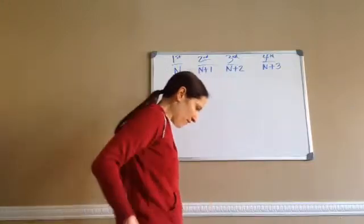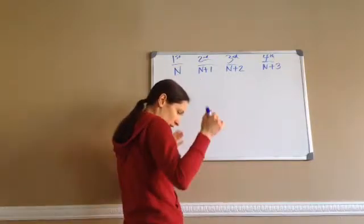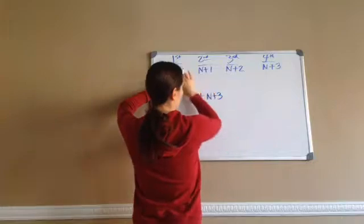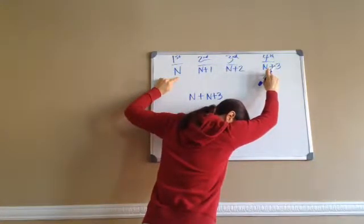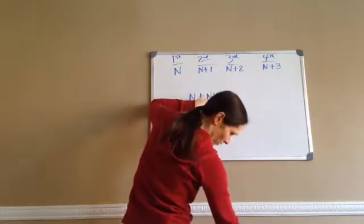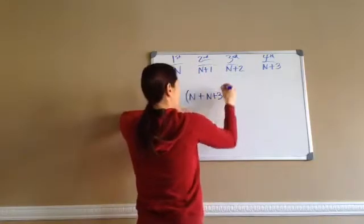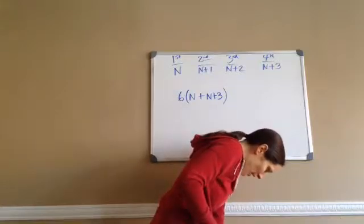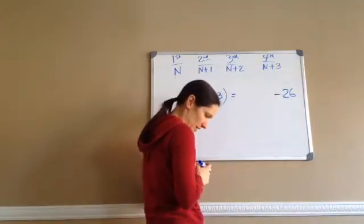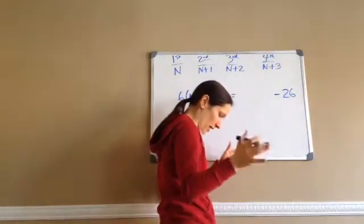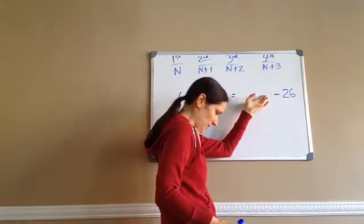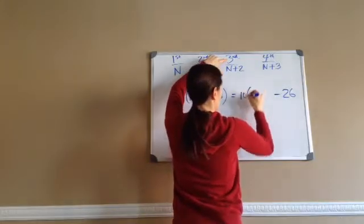Listen to the problem: find four consecutive integers such that six times the sum of the first and fourth is 26 less than 10 times the third. The first and fourth — the sum of those — so n plus n plus 3. And they're wanting me to do 6 times that. Six times the sum of the first and fourth is 26 less than — which means minus 26 at the end — 10 times the third integer. The third is n plus 2, so 10 times n plus 2.